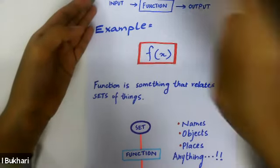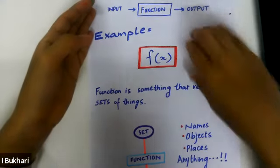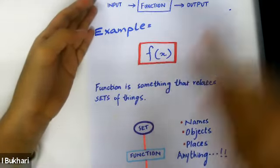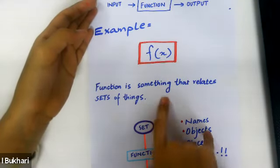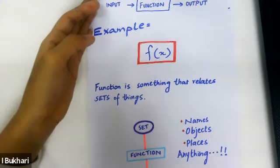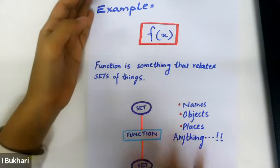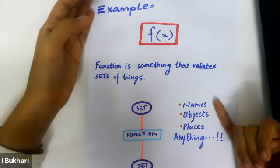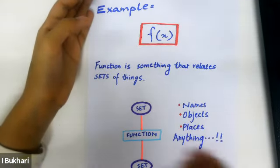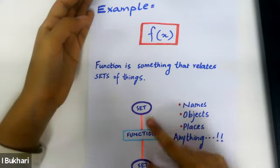A common example of a function which most math books use is f of x. A function is something that relates sets of things, and the set could be literally anything — names of people, objects, places you've been to. A function just relates sets.